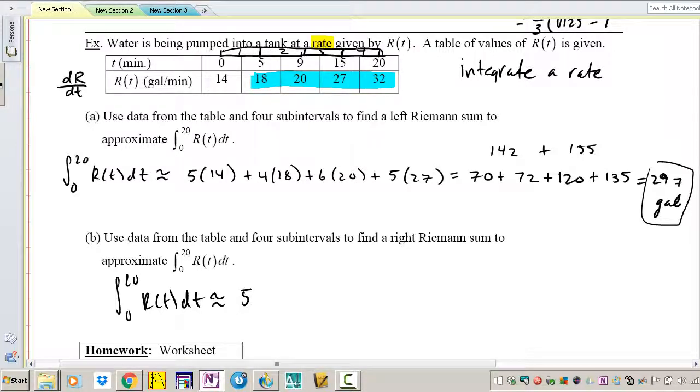It's going to be 5 times 18 plus 4 times 20 plus 6 times 27 plus 5 times 32. Again, I don't have a calculator, I'm going to try my best. 5 times 18 is 90, 80, 6 times 7 is 42, 6 times 20 is 120, 167 plus 160.